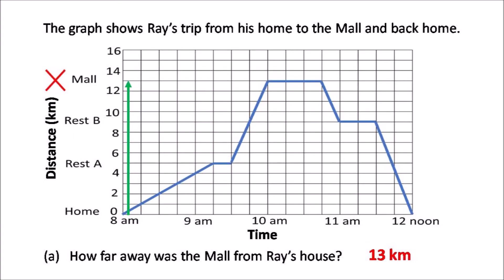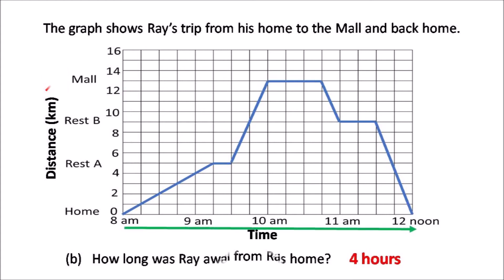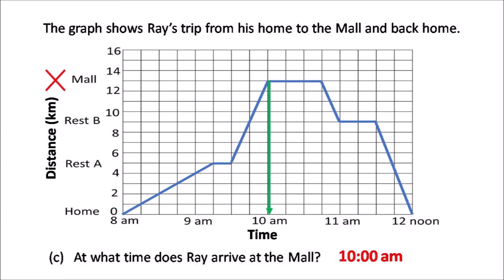A. How far away is the mall from Ray's house? 13 kilometers, so look along the vertical axis where it says mall, and you'll find that answer. B, how long was Ray away from his home? Look along the bottom now for time, so 9, 10, 11, 12, 4 hours.